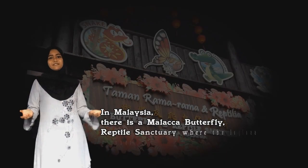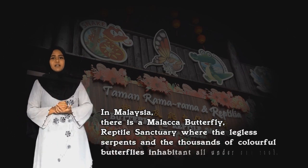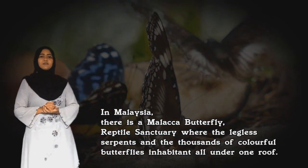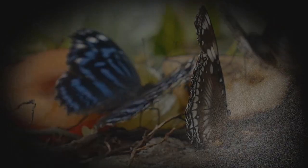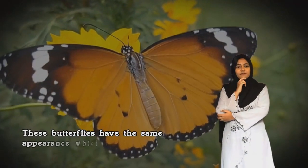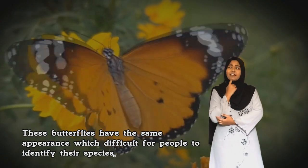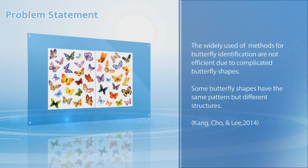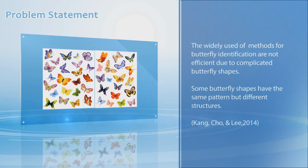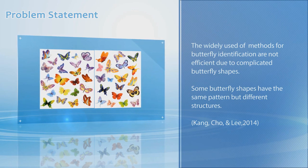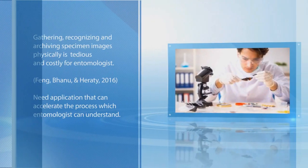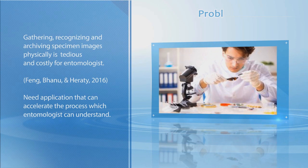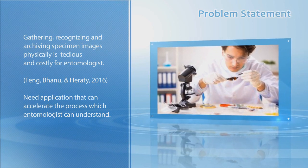In Malaysia, there is a Melaka Butterfly Reptile Sanctuary where the laceless serpents and thousands of colourful butterflies inhabit all under one roof. However, these butterflies have similar appearances, which makes it difficult for people to identify their species. The widely used methods for butterfly identification are not efficient due to complicated butterfly shapes. Some butterfly shapes have the same pattern but different structures. Gathering, recognizing and archiving specimen images physically is tedious and costly for entomologists.